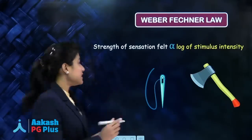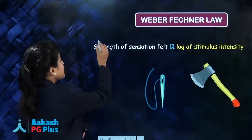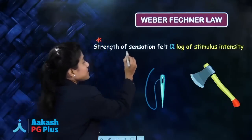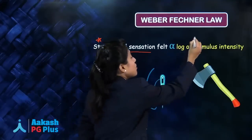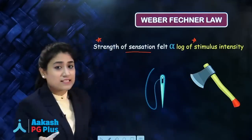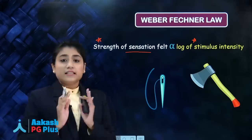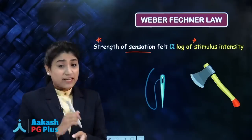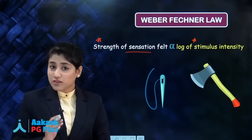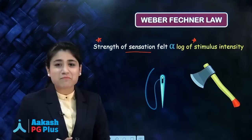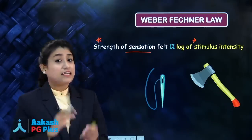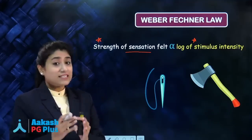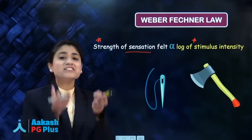What is this law saying? It says that strength of sensation felt is directly proportional to log of stimulus intensity. For example, if someone pricks you with a needle, you will feel less pain as compared to if someone hits you with an axe. This means that if you increase the intensity of the stimulus,